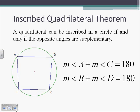The Inscribed Quadrilateral Theorem: a quadrilateral can be inscribed in a circle if and only if the opposite angles are supplementary. So the measure of angle A plus the measure of angle C equals 180, and the same holds for B and D. This works because angle A intercepts arc BD one way, and angle C intercepts the remaining arc BD the other way — together they intercept the whole circle, which is 360 degrees, and half of that is 180.